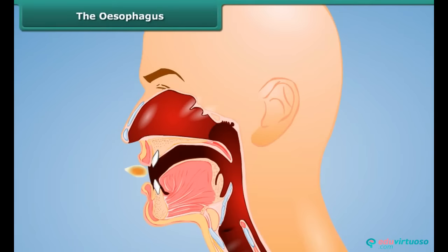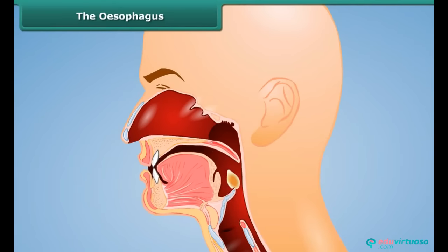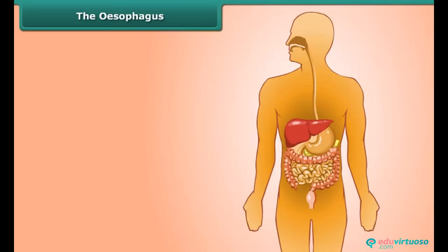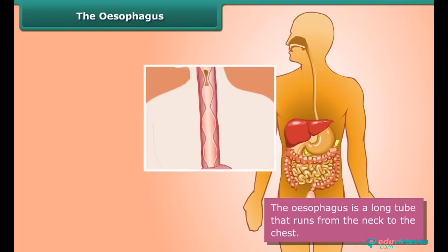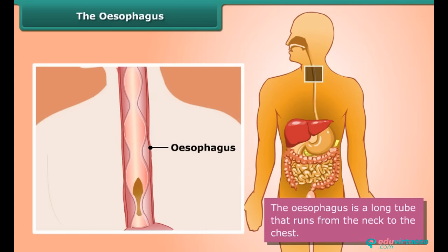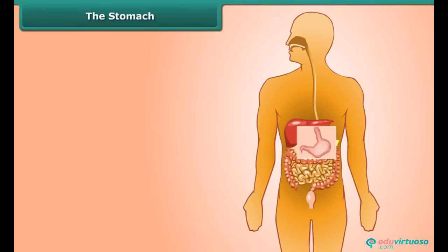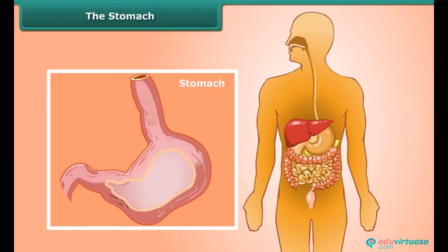When the food we eat becomes a soft mass, our tongue pushes it to the food pipe or esophagus. The esophagus is a long tube that runs from the neck to the chest. The movements of its walls force the food down to the stomach.